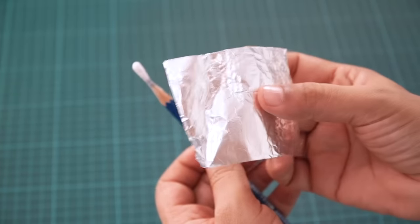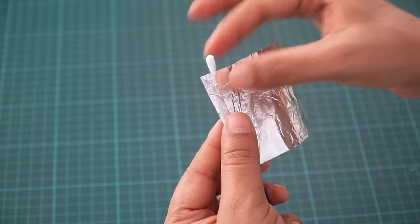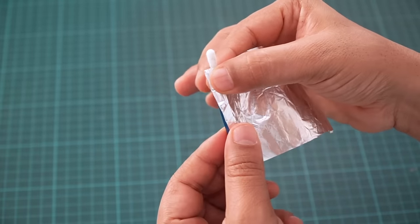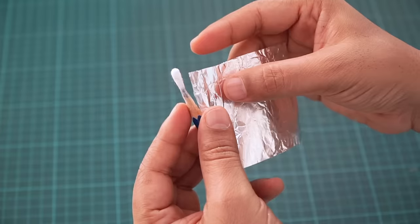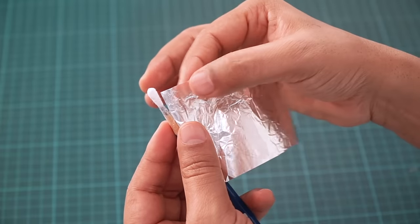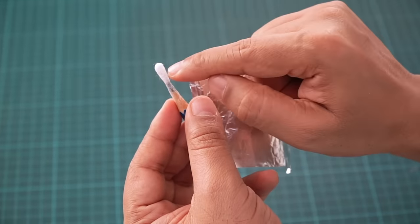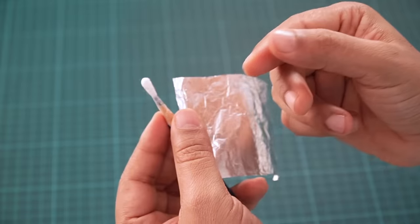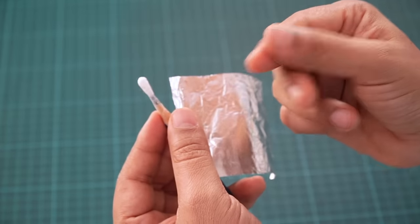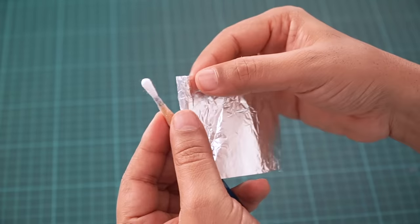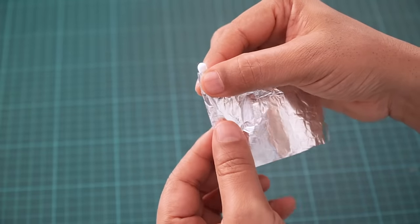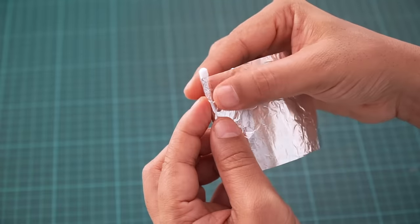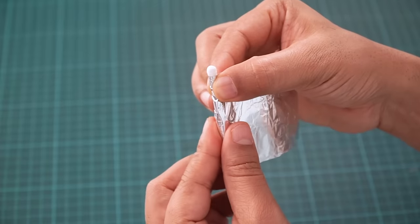So you can just take a small piece of that and now we will just roll it over the pencil. But what you have to keep in mind is that the aluminum foil should touch the tip of the earbud. Basically touching the cotton. Because you want the charge to transfer from your hand to the aluminum foil. And from the foil to the tip of the stylus, which is this cotton earbud.